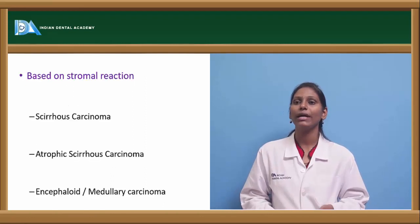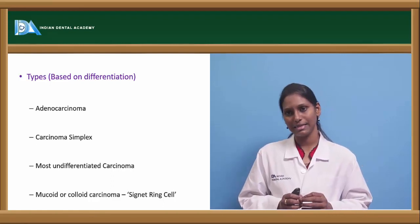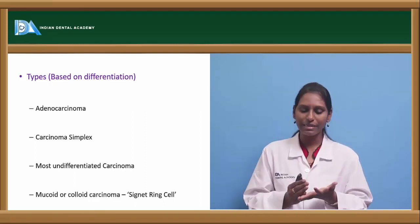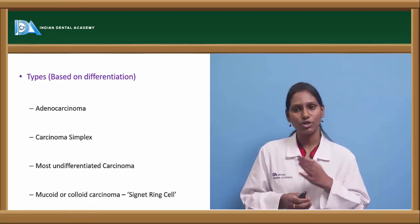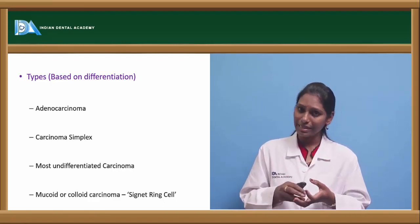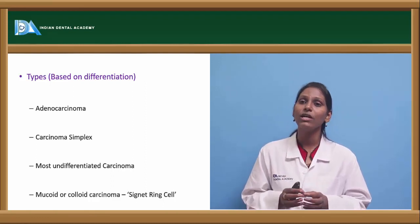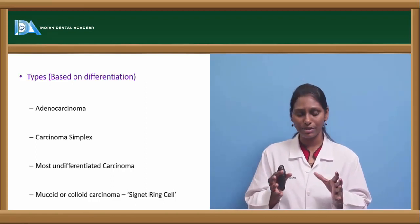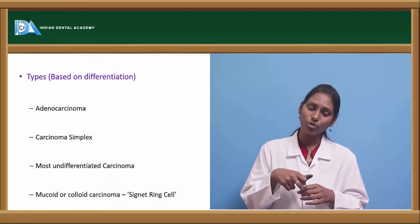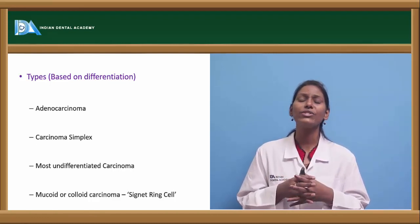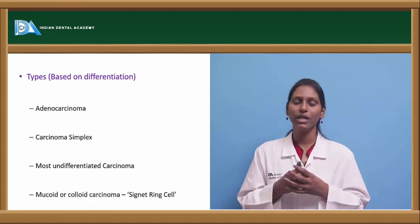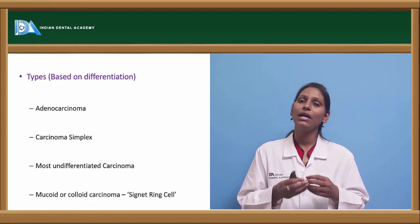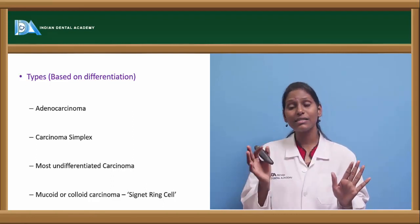Based on differentiation, glandular carcinoma is divided into four major types: adenocarcinoma, carcinoma simplex, most undifferentiated carcinoma, and mucoid or colloid carcinoma. Adenocarcinoma is the best differentiated — it has excellent acinus formation. Carcinoma simplex is a less differentiated variant with clumps of cells surrounded by stroma and no central cavitation. The glandular structure is not appreciable in carcinoma simplex.